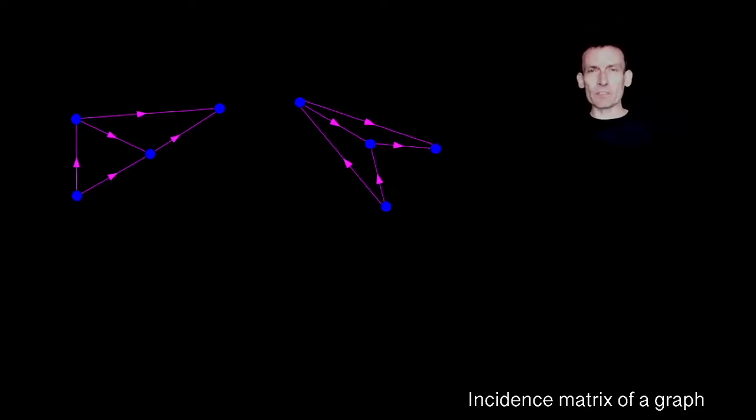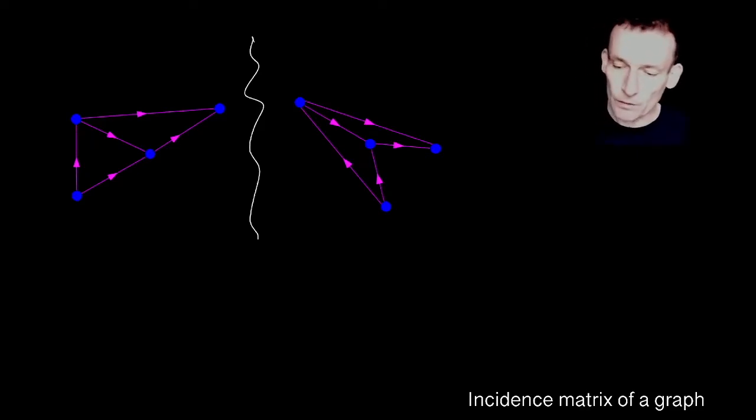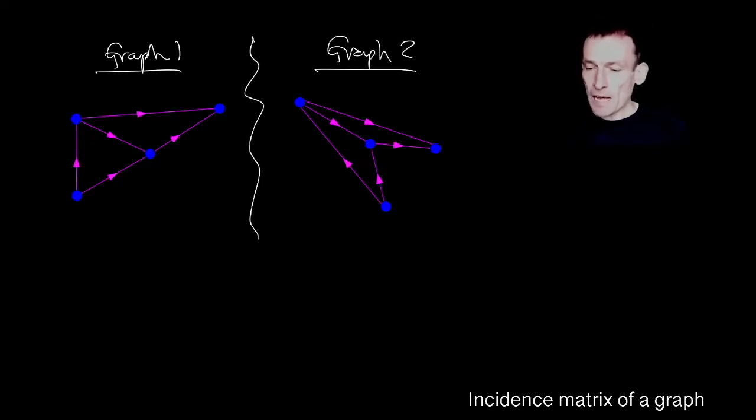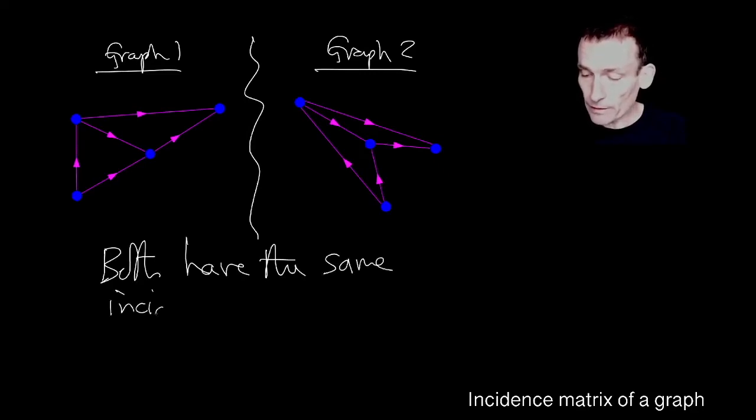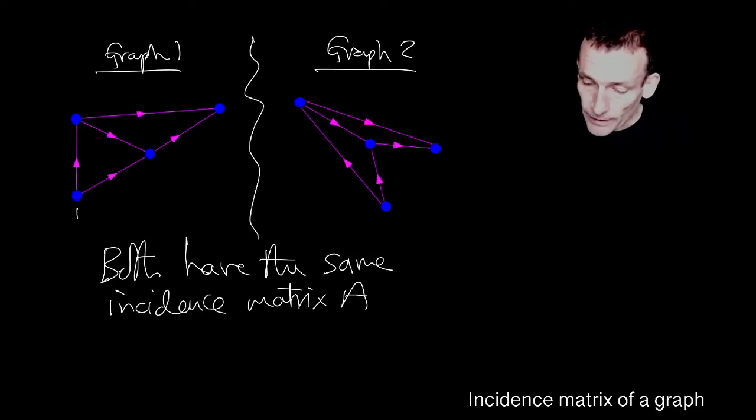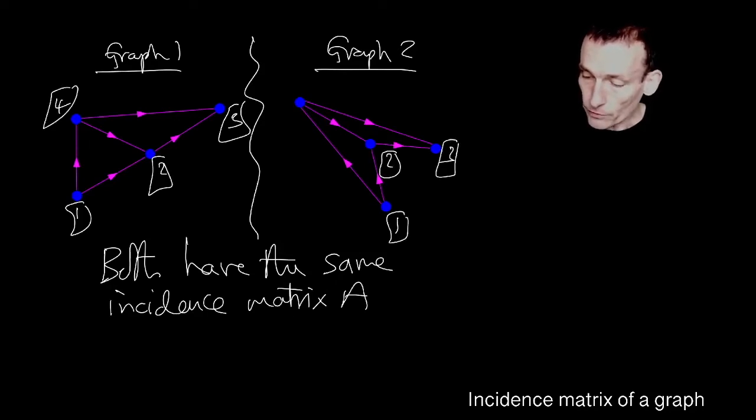Look at those. A couple more graphs. They look kind of different, don't they? Assume that these are two different graphs. So this is graph one. And this is graph two. They look kind of different, but they've both got four nodes and they've both got five edges. So it turns out that both have the same incidence matrix A, the one that I just wrote down. If I identify this with one, two, three, and four, and this as one, two, three, and four.